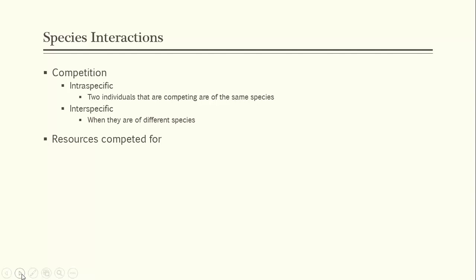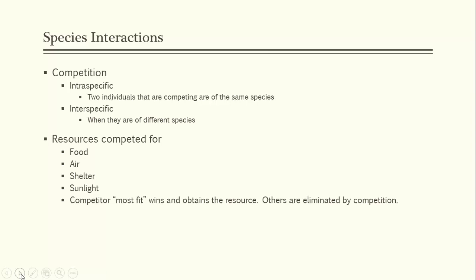Individuals could be competing to live in a fallen tree, competing to catch a running rabbit, or to mate with the most desirable female in the population — all of that is competition. The competitor who is most fit eventually wins and obtains the resource, while others are eliminated by competition. When two different species in a region compete and the better adapted species wins, this is called competitive exclusion.